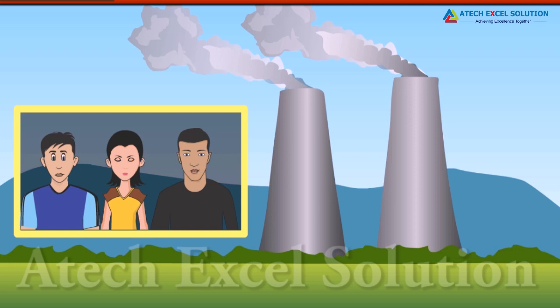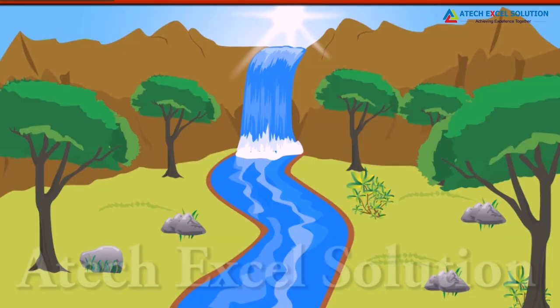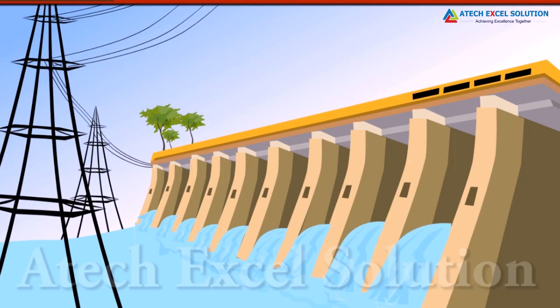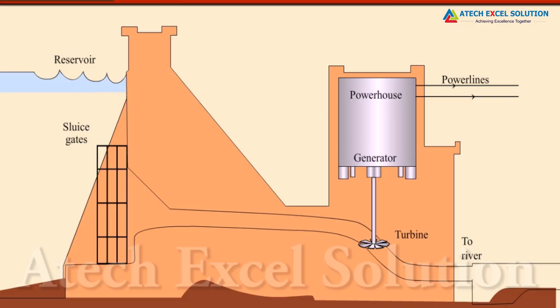And guess what happens in a hydropower plant? Hydro comes from the word water — we use water! Correct! A waterfall from which water comes down with great force can be used to turn a turbine. But there are very few such waterfalls. That is why hydropower plants are made at water dams. The water level rises in a dam, and the water comes down with force, helping to turn the turbine.